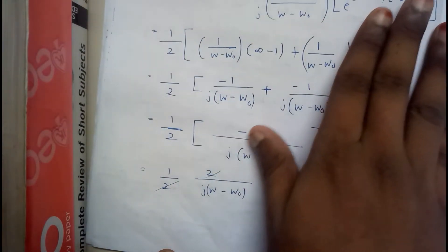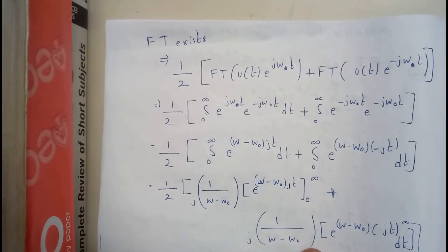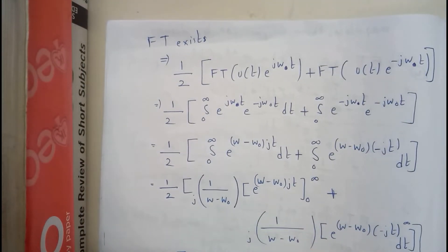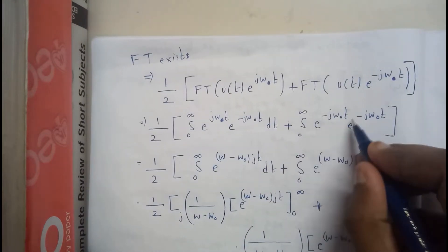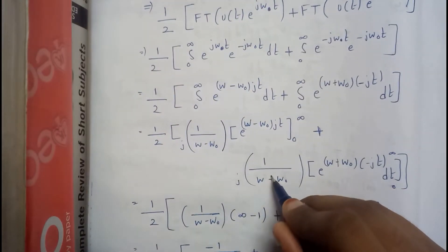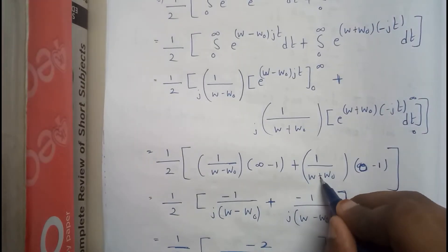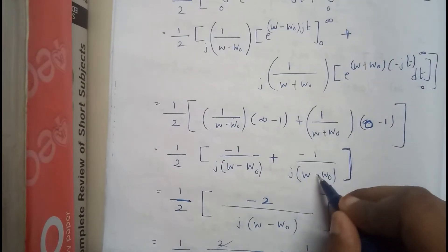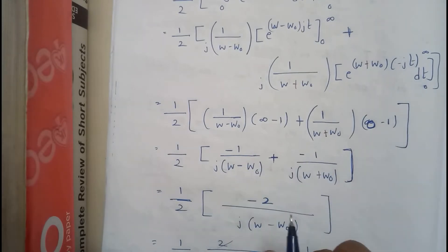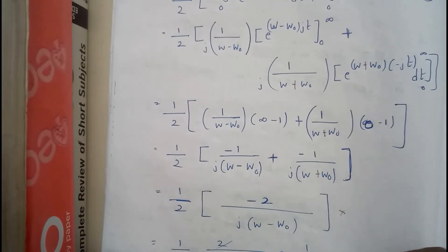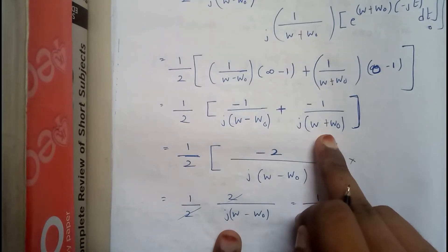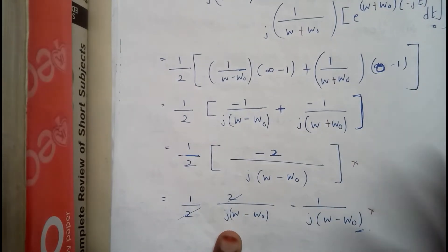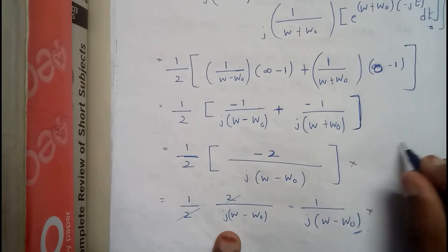There is a mistake in this problem — a friend pointed it out. When taking those two terms common, the sign should be positive, not negative. That was the major mistake. With that correction, the LCM approach in the previous step was wrong. Now with the correct signs, you take the LCM and get the final result, which is the Fourier transform of cos(ω₀t) u(t).